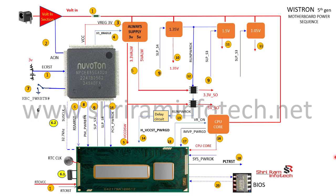How to identify the Vistron motherboard: you can identify it with a 5-digit number like 12345, then dash 1 or dash 2. The Compil motherboard starts with an LA number, the Quanta motherboard numbers start from DA, but the Vistron motherboard starts from 5 digits and then dash 1 or dash 2.